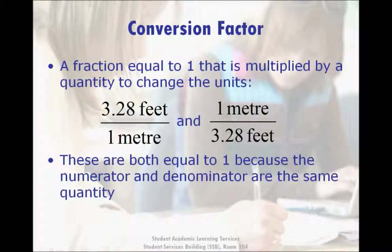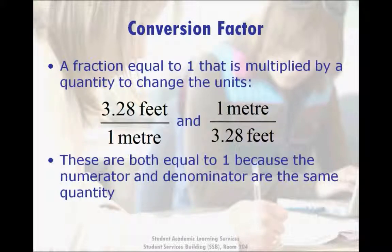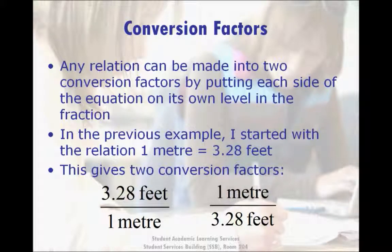The next thing after finding a unit relation is to turn it into a conversion factor. A conversion factor is a ratio or fraction that is actually equal to 1, which can be multiplied by a quantity to change its unit of measurement. The two conversion factors shown here both came from the relation 1 meter equals 3.28 feet. These fractions are both equal to 1 because the top and bottom are actually the same quantity. You can make two different conversion factors from any unit relation by putting the left and right sides of the equal sign on the top and bottom of the fraction in either order.